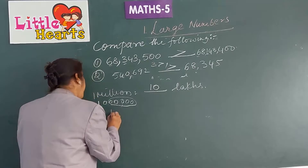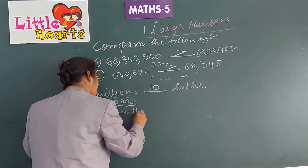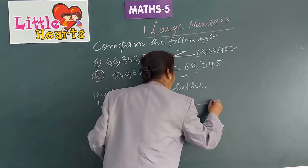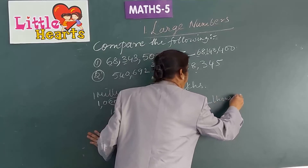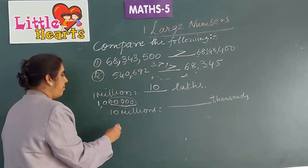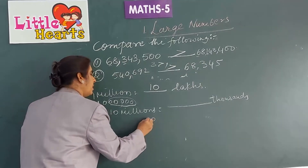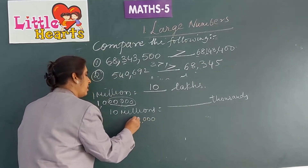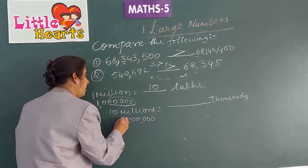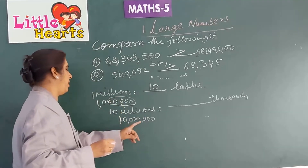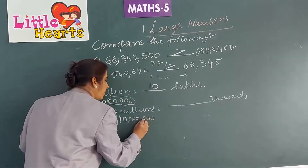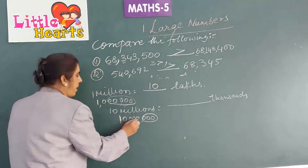10 millions is equal to how many thousands? This is 10 millions. To find how many thousands, cut 3 zeros and count the remaining digits.